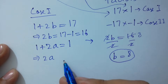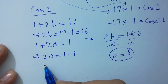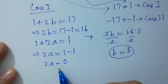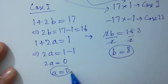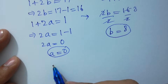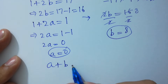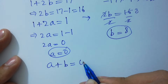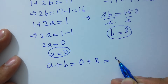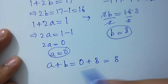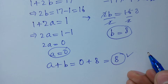Now solving for a: 2a equals 1 minus 1 equals 0, so a equals 0. Therefore, the value of a plus b equals 0 plus 8, which gives us a plus b equals 8.